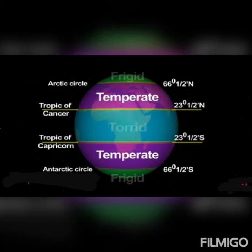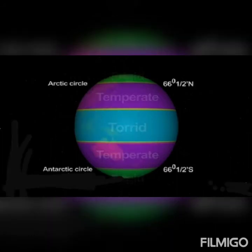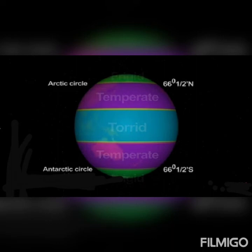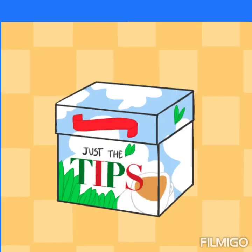The second is the Temperate Zone. Temperate means moderate — neither too hot nor too cold. The sun rays are always slanted in these areas, so they receive less heat. The Temperate Zone lies between the Tropic of Cancer and the Arctic Circle in the north, and between the Tropic of Capricorn and the Antarctic Circle in the south. The Frigid Zone lies between the Arctic Circle and the North Pole in the Northern Hemisphere, and between the Antarctic Circle and the South Pole in the Southern Hemisphere. This zone never receives direct rays of the sun and remains very cold throughout the year.